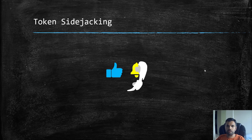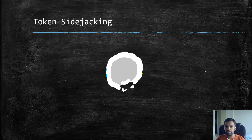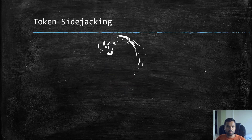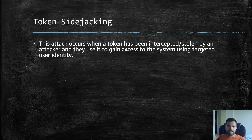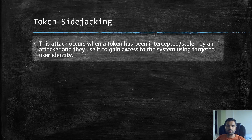Token sidejacking — this attack occurs when a token has been intercepted or stolen by an attacker, who then uses it to gain access to the system using the targeted user's identity.